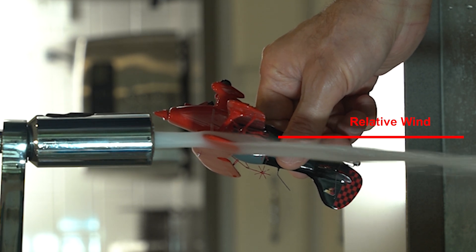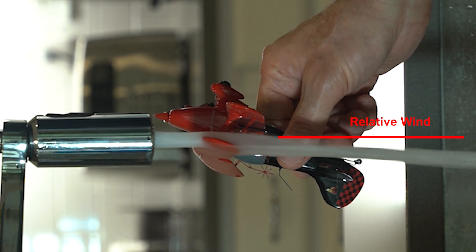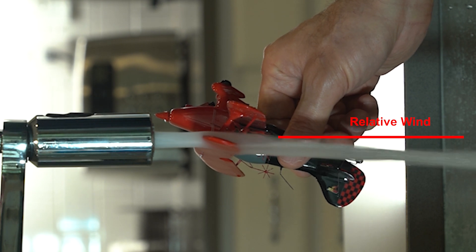The airplane doesn't care if it's upside down or right side up, in fact it doesn't even know. The wing is just doing its job.